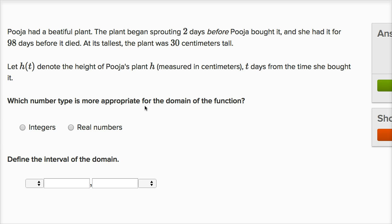Which number type is more appropriate for the domain of the function? They tell us whether it's integers or real numbers. The domain of a function is the set of all inputs for which the function is defined. The inputs here are t, representing days, and if I input t into the function h, it'll output the height of the plant.